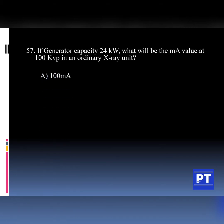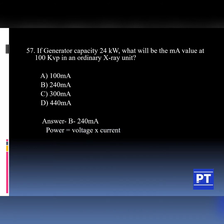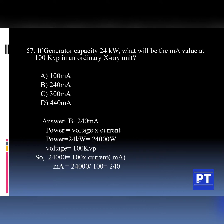Options are: Option A 100 mA, Option B 240 mA, Option C 300 mA, and Option D 440 mA. The answer is Option B, 240 mA. It can be calculated from the equation: Power equals voltage into current. Here the power is 24 kW, which converts to 24,000 watts, and the voltage is 100 kVp. Using this equation, we get the current MA as 240.